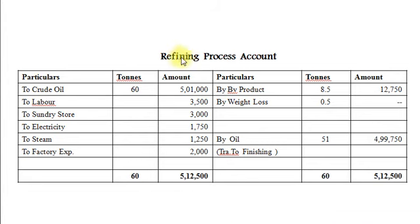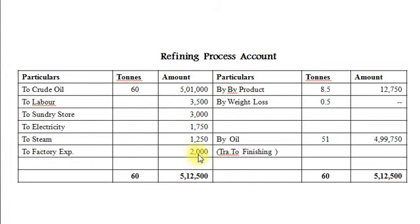Second, refining process. On the debit side, first we introduce crude oil transferred from crushing process: 60 tons, amount Rs. 51,000. Other cost elements: labor cost Rs. 3500, sundry stores Rs. 3000, electricity Rs. 1750, steam Rs. 1250, factory expenses Rs. 2000.